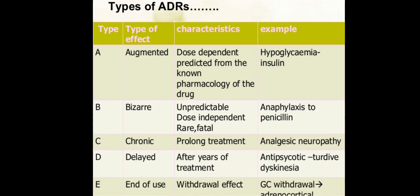The types of ADR are classified as A, B, C, D, E. Type A is augmented — dose-dependent and predicted from the known pharmacology of the drug, for example hypoglycemia caused by insulin. Type B is unpredictable, dose-independent, rare, and fatal — for example anaphylaxis to penicillin — and in this condition we switch to the next class of the drug.